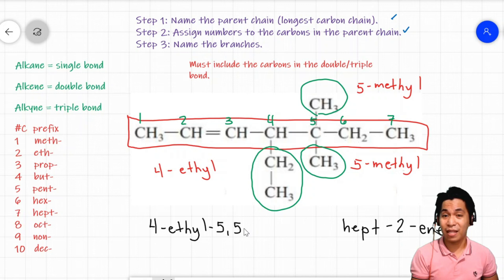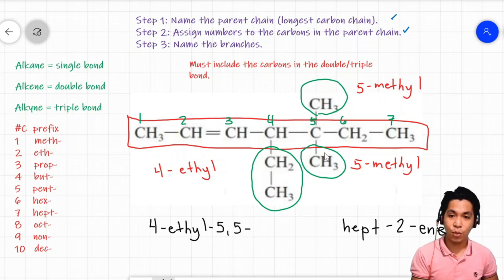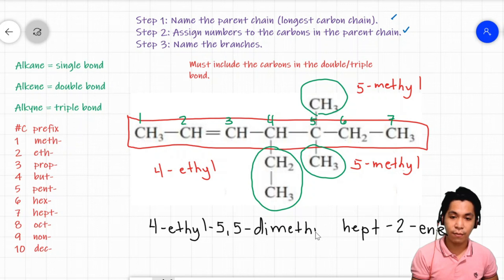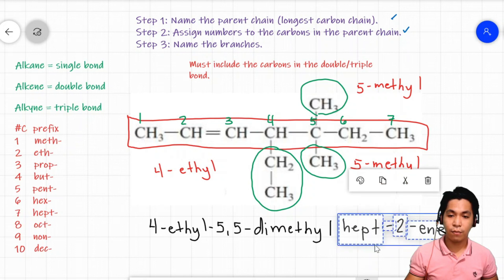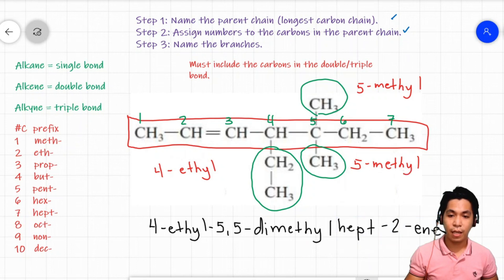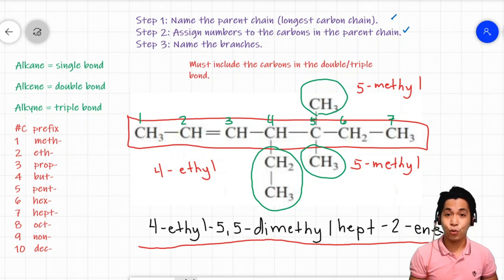Then, separated by a dash, we include the two methyls both found at carbon five. When two similar branches are on the same carbon, you write the carbon number twice: five, five. If there were three methyls on one carbon, you'd write the number three times — no shortcuts. Since we have two methyls and two numbers, we use the prefix 'di' followed by 'methyl.' Combining everything, the name is '4-ethyl-5,5-dimethylhept-2-ene.'